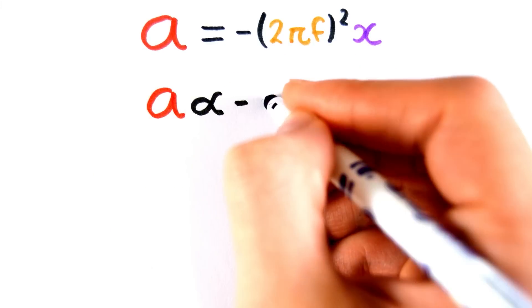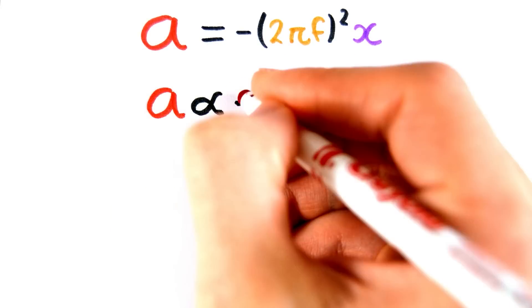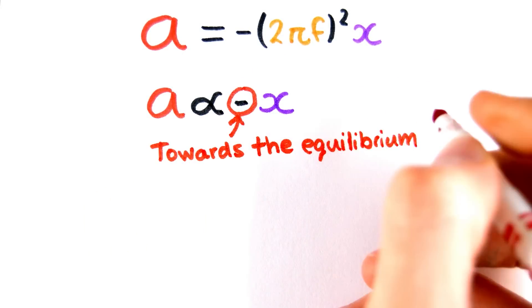Furthermore, the equation for the acceleration of a body in simple harmonic motion is a equals minus 2πf squared x. This shows that the acceleration is directly proportional to the displacement and that it is always directed towards the equilibrium position.